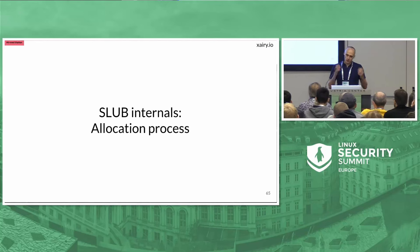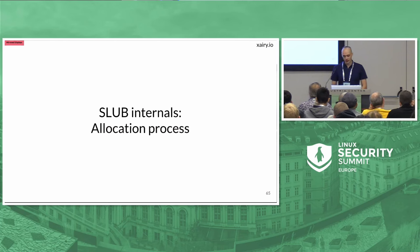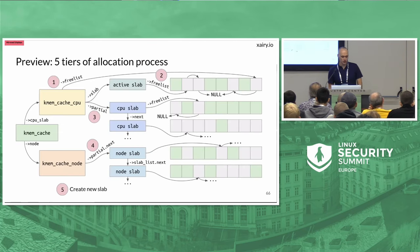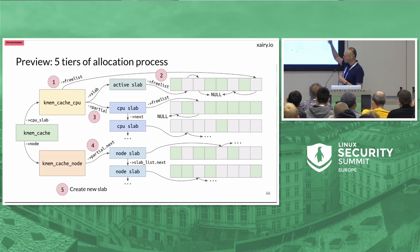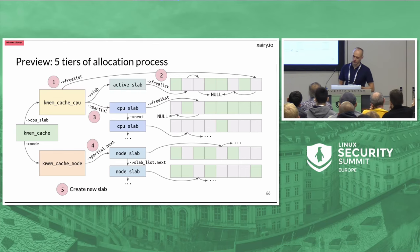Before we talk about our first slab shaping exploit, let's talk about how allocations happen. Within the SLUB allocator there are five different tiers of the allocation process — not an official term, just what I call them. The first tier is allocating from the lockless free list, second tier from the per-active-slab free list, then per-CPU partial slabs, then per-node slabs, and finally creating a new active slab.